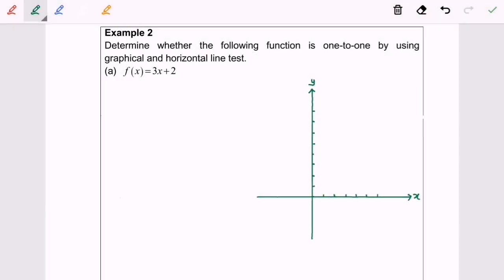Now I'm going to discuss the second method, which is the graphical method or horizontal line test. I'm going to plot the graph. Let's say x equals 0, then f(0) equals 2. We need another point. If x equals 1, then f(1) equals 5.